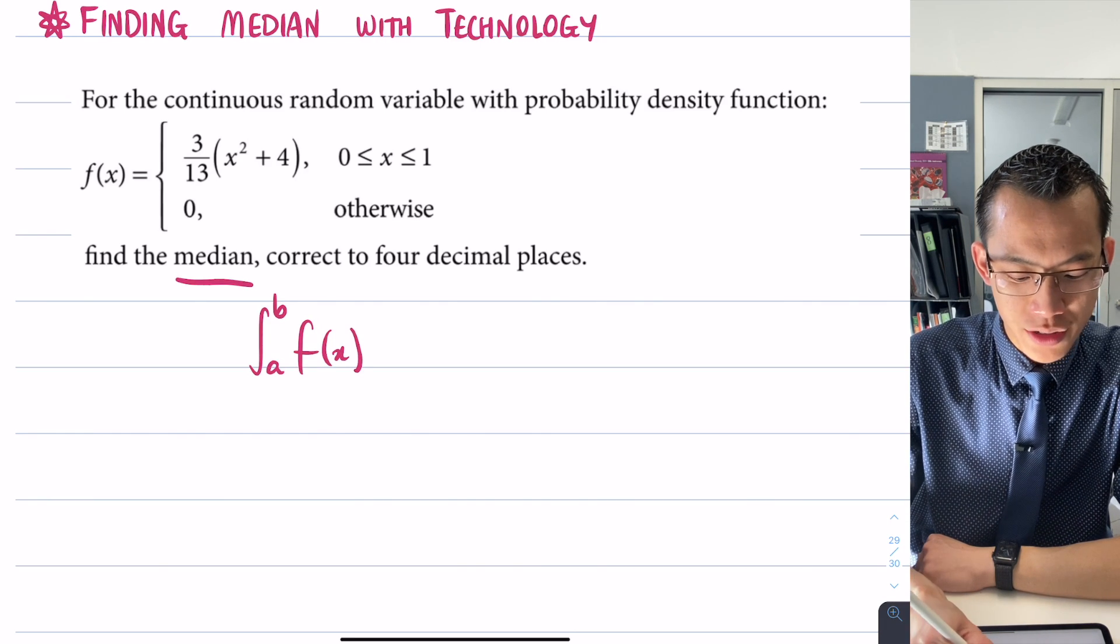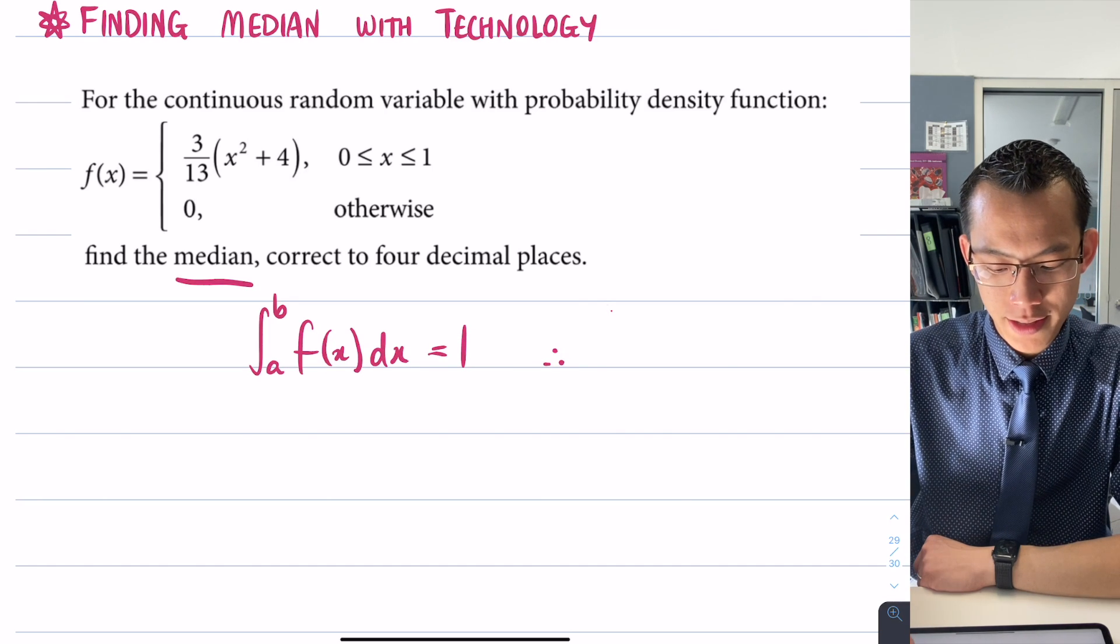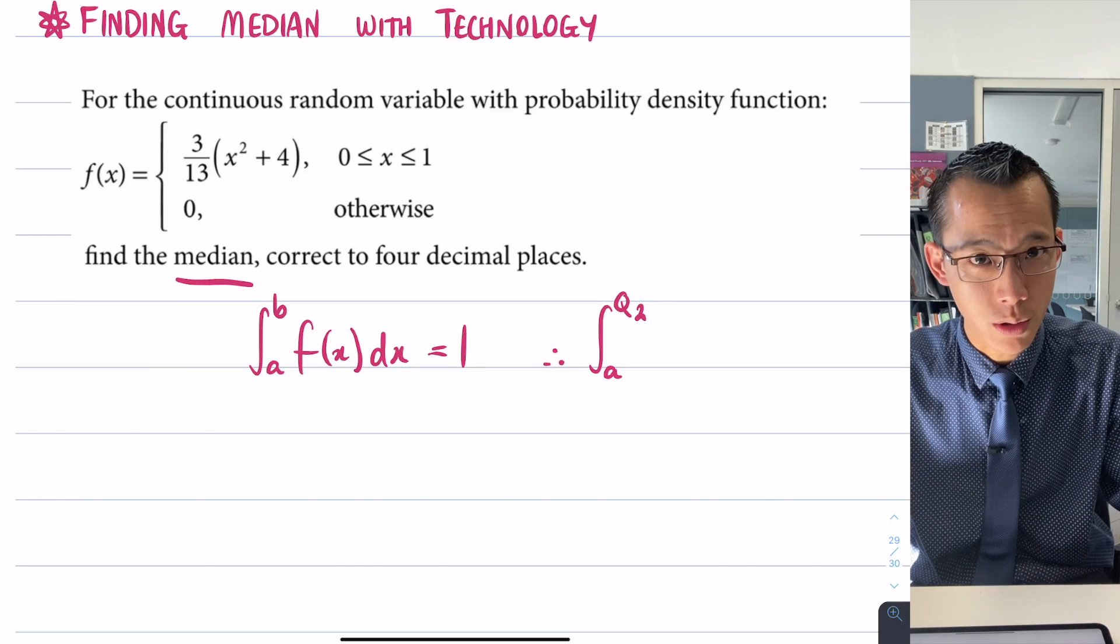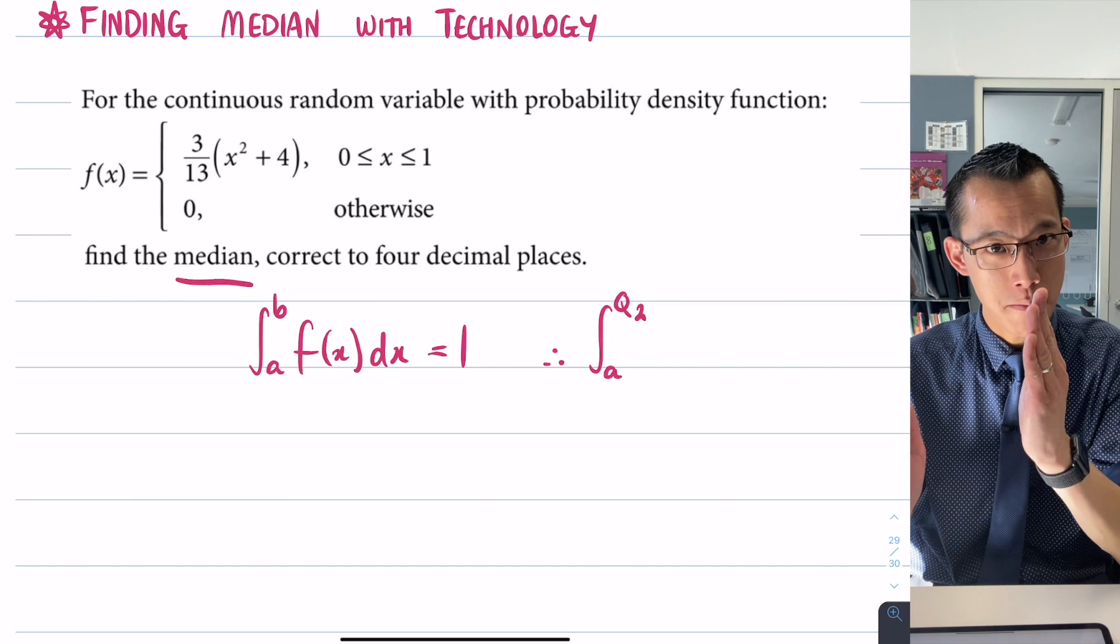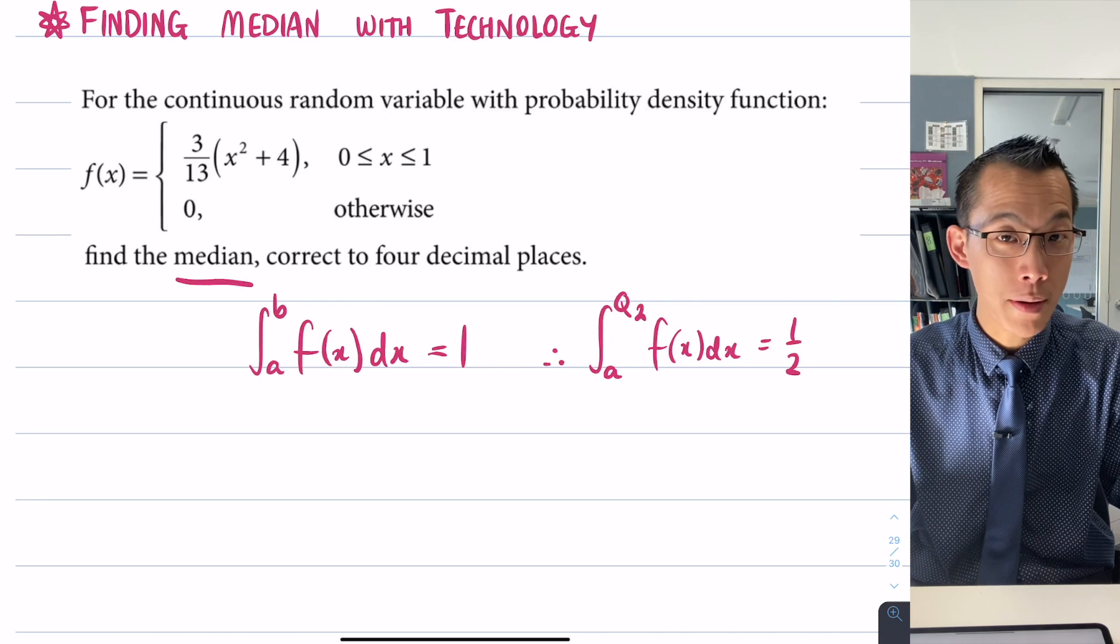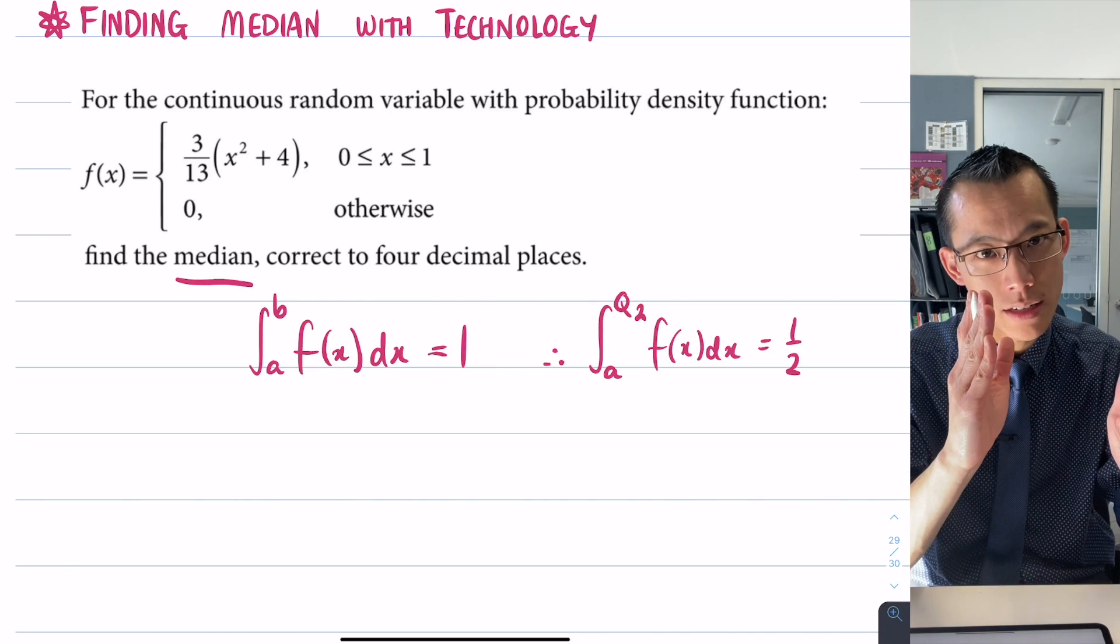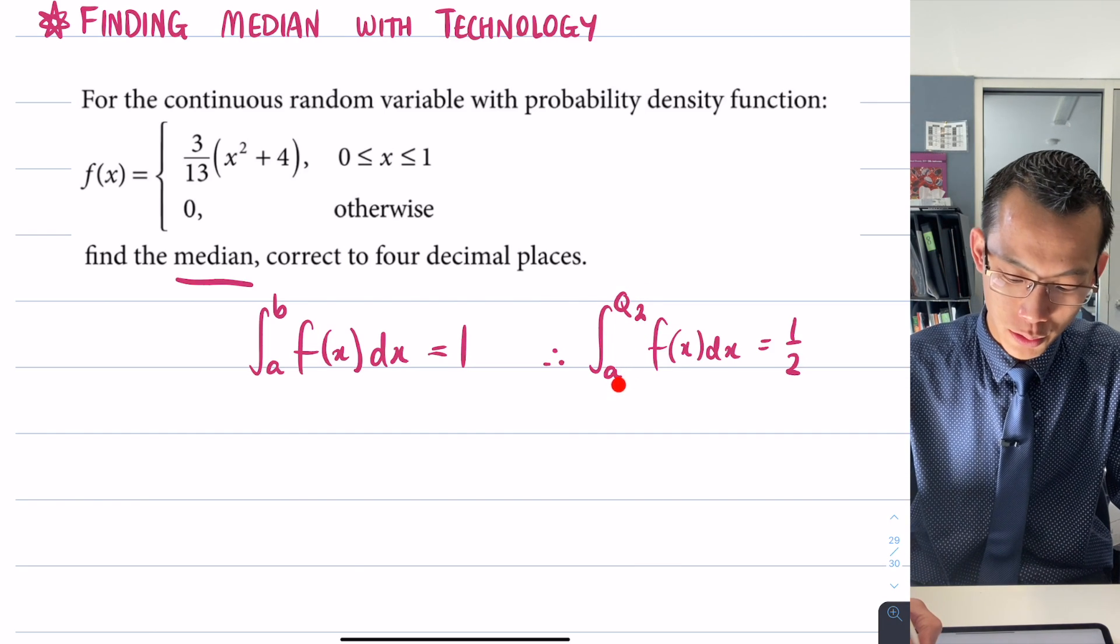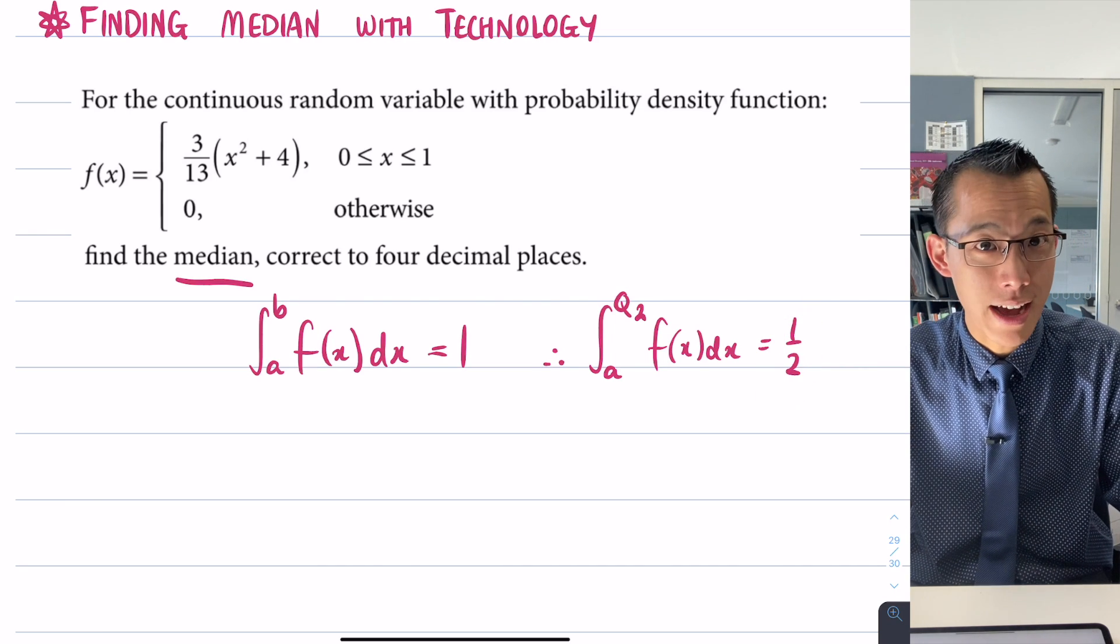Since we know that if you integrate a probability density function over its entire domain that should give you one, therefore if we integrate from the beginning of the domain up to the median, we should get half of the people. The same is true if you started from the median and went to the end of your data set.